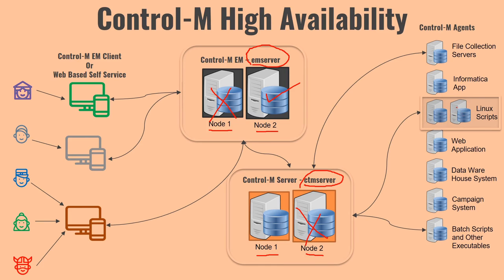For Control M Agent high availability, as a Control M admin you won't have much control since these servers are owned by different application teams. However, if an application team has multiple servers and wants jobs to failover to another server if one goes down, you can install Control M Agents on both servers. Whenever Control M finds that one node is not available, it will request the other node to execute the job. You can configure jobs to run on one or both nodes.